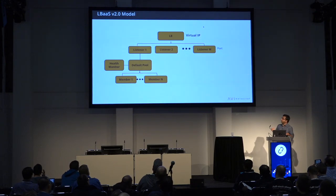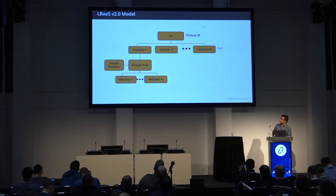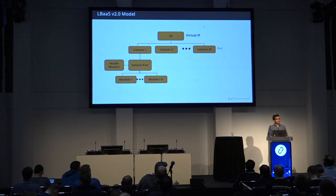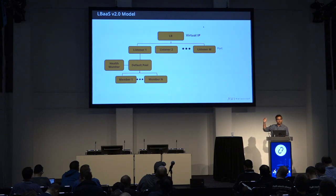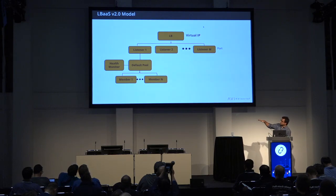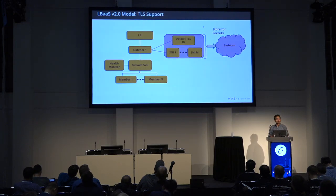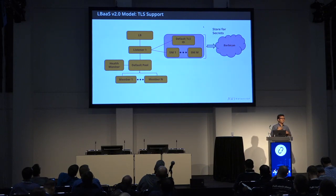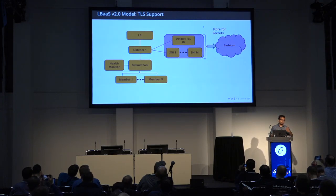LBaaS V2 is the next round of API enhancements. The first new construct added was the concept of a listener. You have the load balancer as the top-level object where you specify your front-end IP address, but instead of having a single port baked into the IP address, there is now a resource called a listener where you split your service across. So if you have port 80 and 443, you'll have a couple of listeners. On the other side, the back-end model is very similar to LBaaS V1.